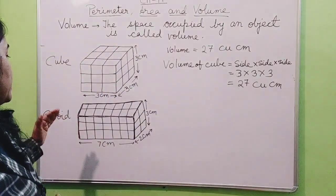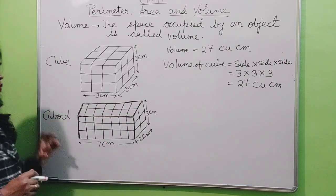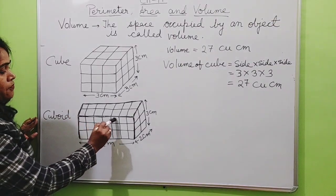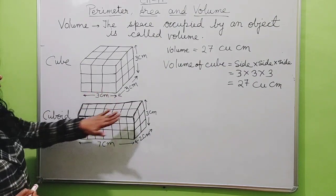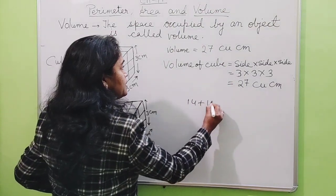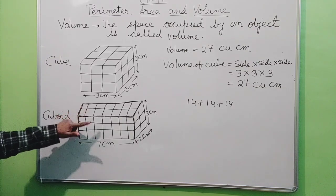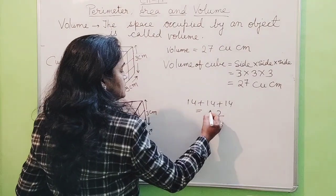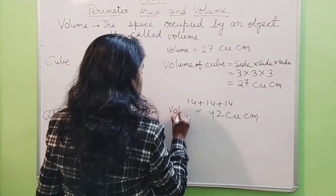Now let's look at the cuboid figure. There are many unit cubes of side 1 centimeter. Counting: 1, 2, 3, 4, 5, 6, 7 — so 7 cubes on the front face, same 7 at the back, making 14. On the top, 14 cubes; in the middle also 14; and at the bottom also 14. So 14 + 14 + 14 = 42. The volume is 42 cubic centimeters.